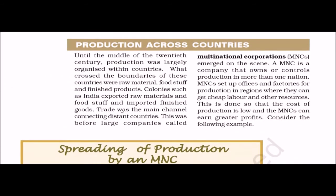Production across countries: Until the middle of the 20th century, production was largely organized within countries. The situation today is that production has crossed the boundaries of countries. Raw materials, food stuff, and finished products now move across borders. Colonies such as India exported raw materials and food stuff and imported finished goods. Trade was the main channel connecting distant countries.